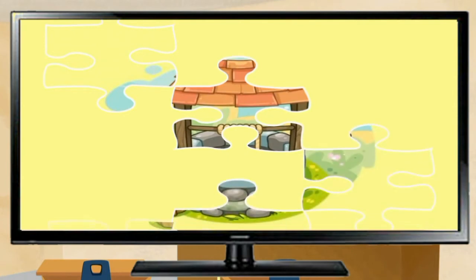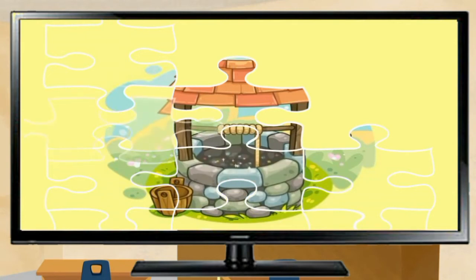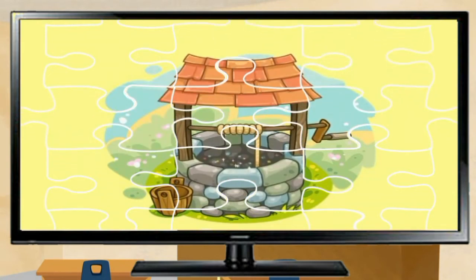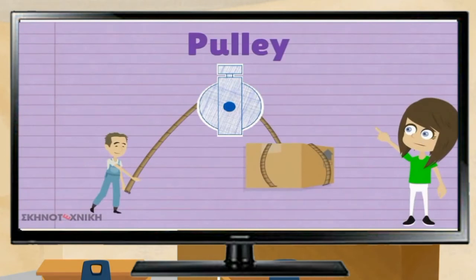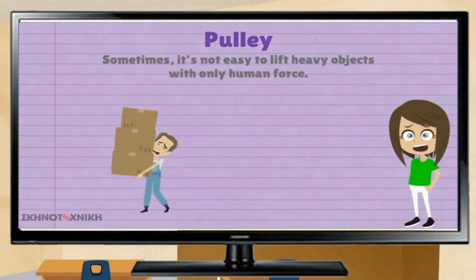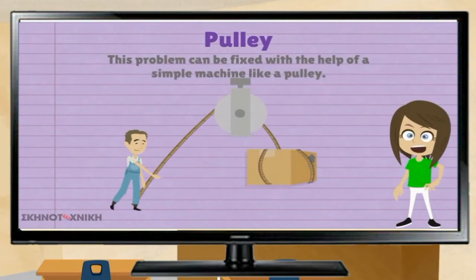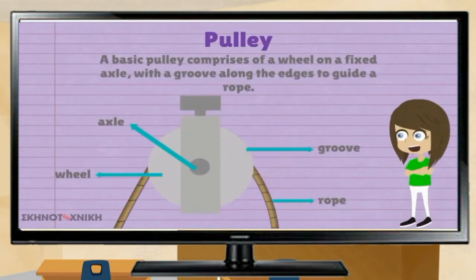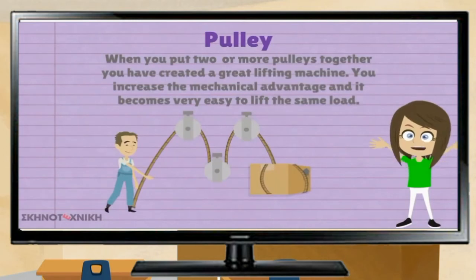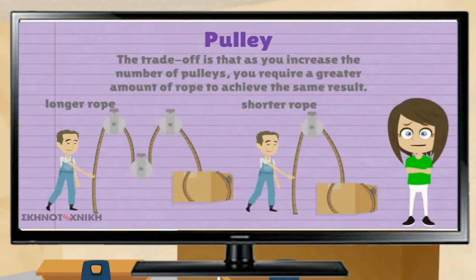It's complete! It is a wishing well. A wishing well is a pulley. Sometimes it's not easy to lift heavy objects with only human force. This problem can be fixed with the help of a simple machine like a pulley. A basic pulley comprises a wheel on a fixed axle with a groove along the edges to guide a rope. When you put two or more pulleys together, you have created a great lifting machine. You increase the mechanical advantage and it becomes very easy to lift the same load. As you increase the number of pulleys, you require a greater amount of rope to achieve the same result. By decreasing the effort needed to lift the load, you have to apply the force for a longer period of time.